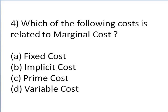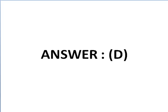Prime cost refers to the direct cost of manufacturing an item. It is calculated by adding the cost of raw materials to the cost of labor directly associated with the production process. So the answer is D — variable cost.